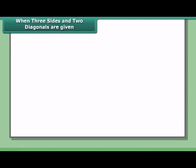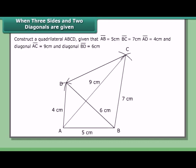When three sides and two diagonals are given, construct quadrilateral ABCD given that AB = 5 cm, BC = 7 cm, AD = 4 cm, diagonal AC = 9 cm, and diagonal BD = 6 cm.